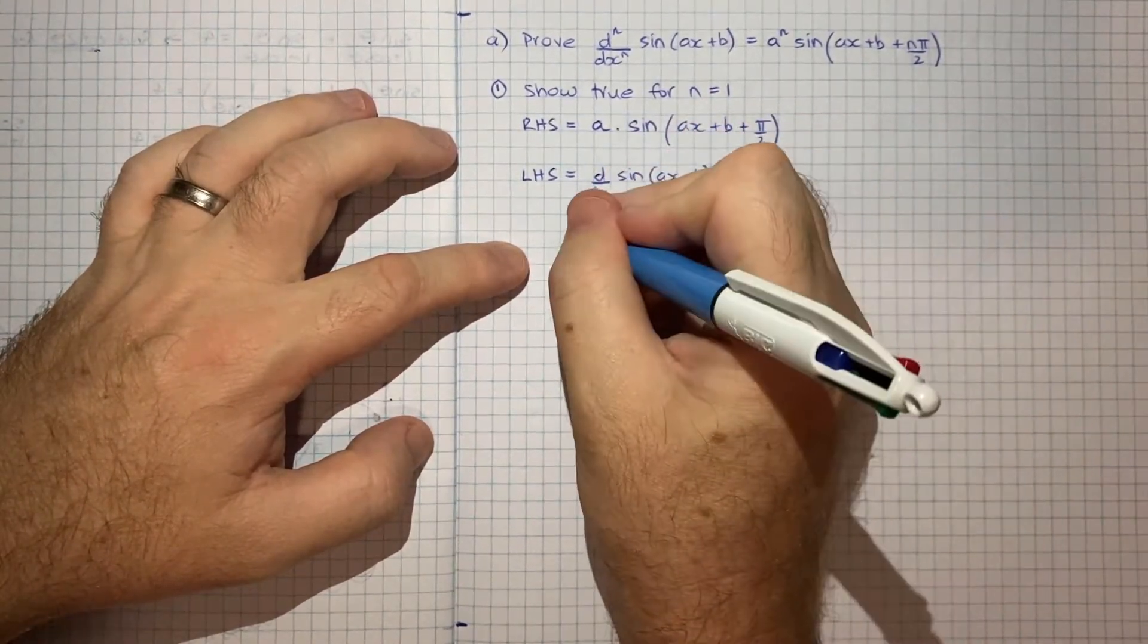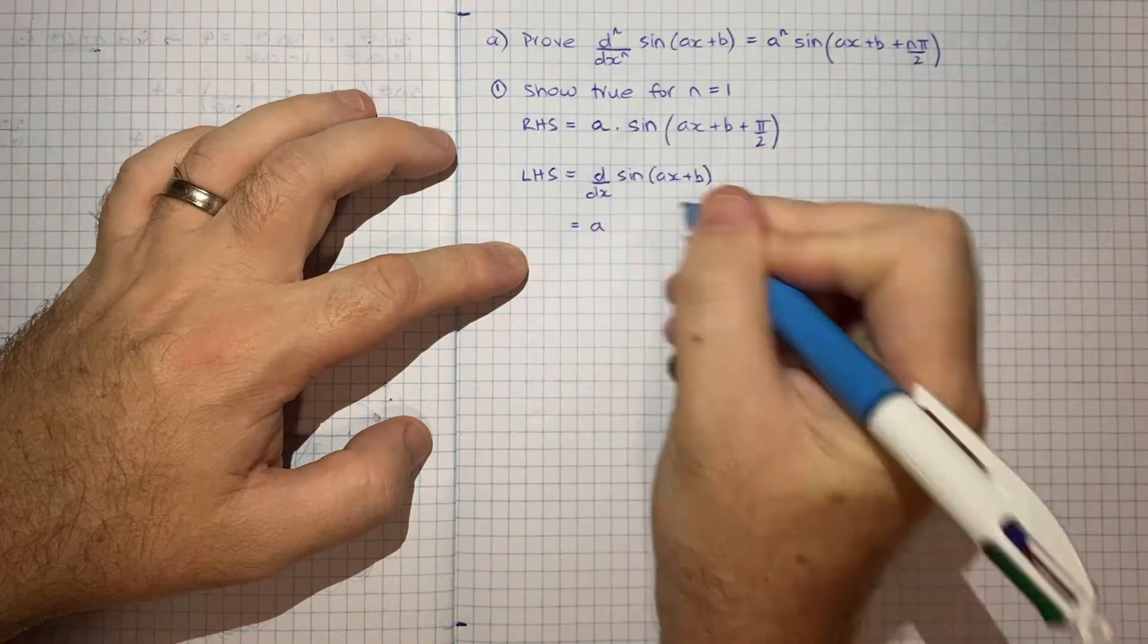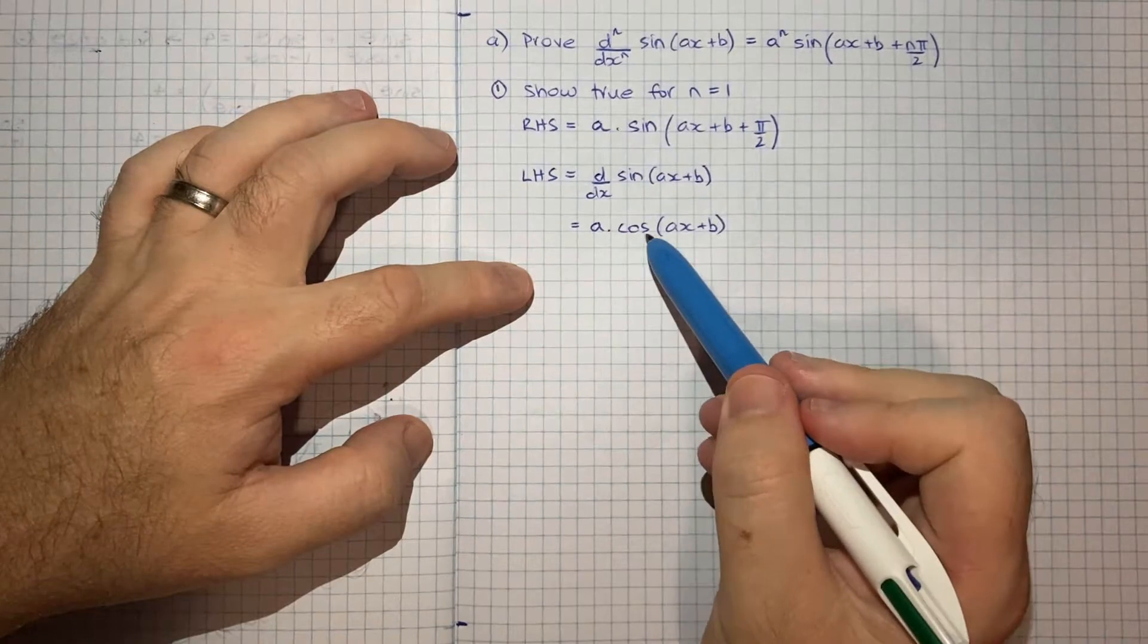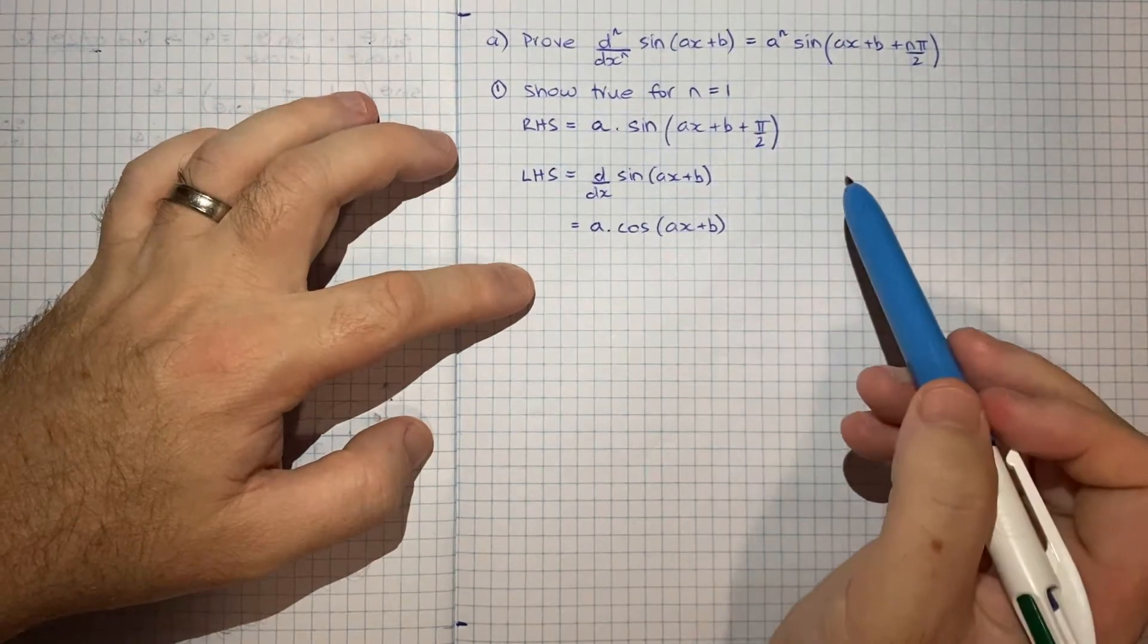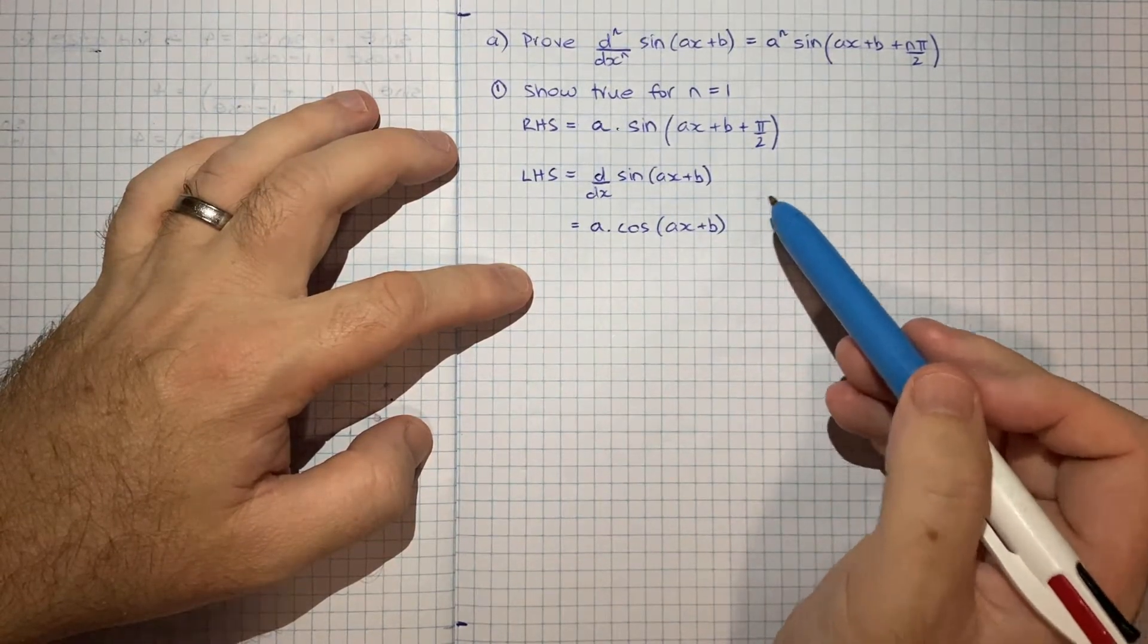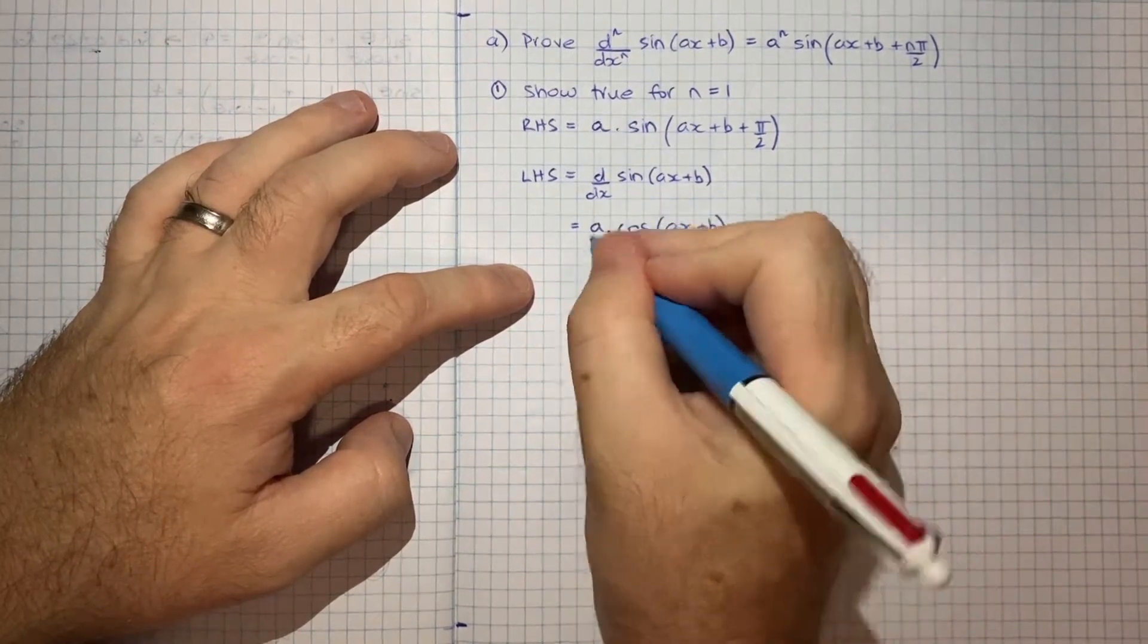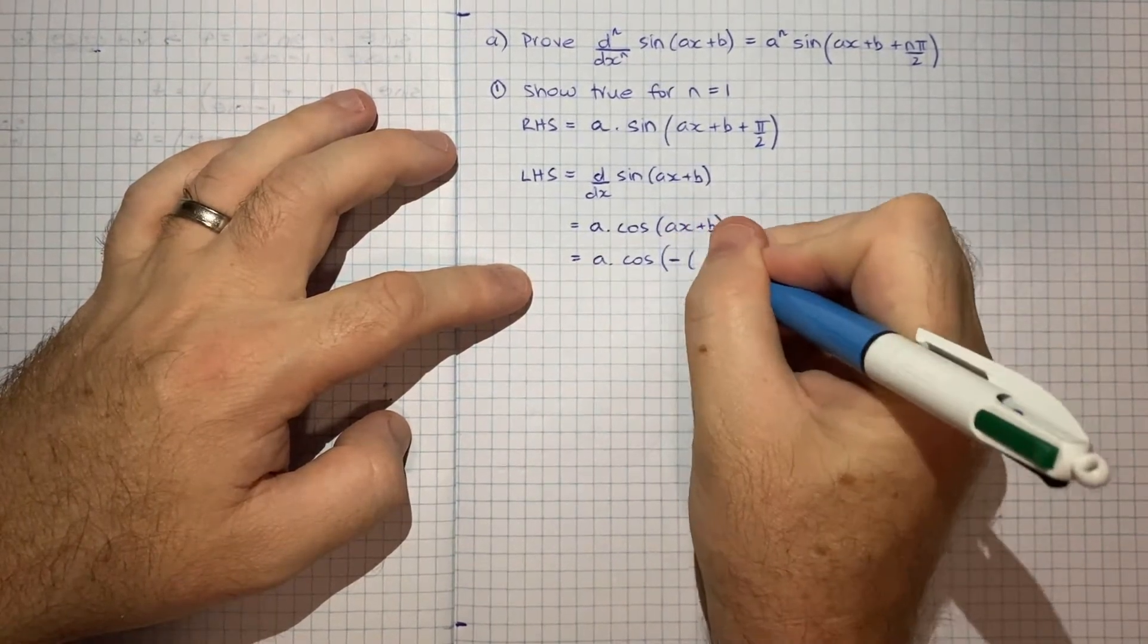Now that will be equal to, we differentiate what's on the inside with respect to x. So that will just be a. And then that gets multiplied by the cos of ax+b. So we kind of need to somehow get from this cos to the sine. And somehow there needs to be a π/2 in there as well.